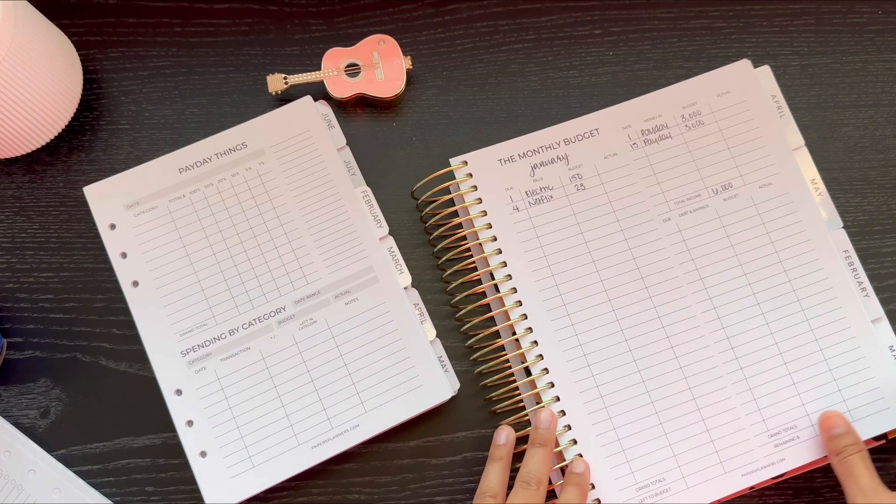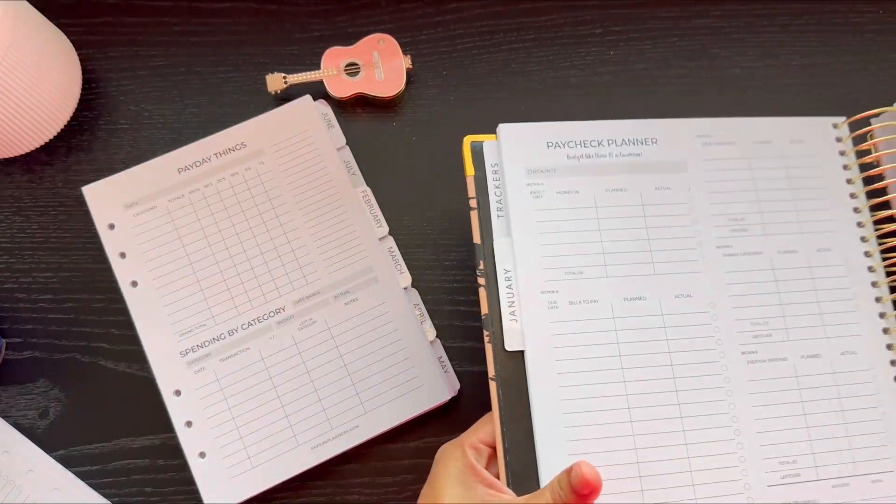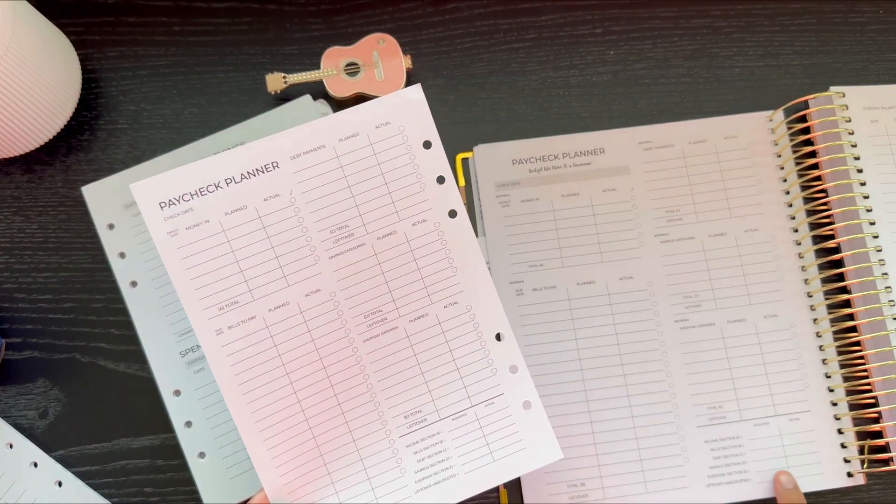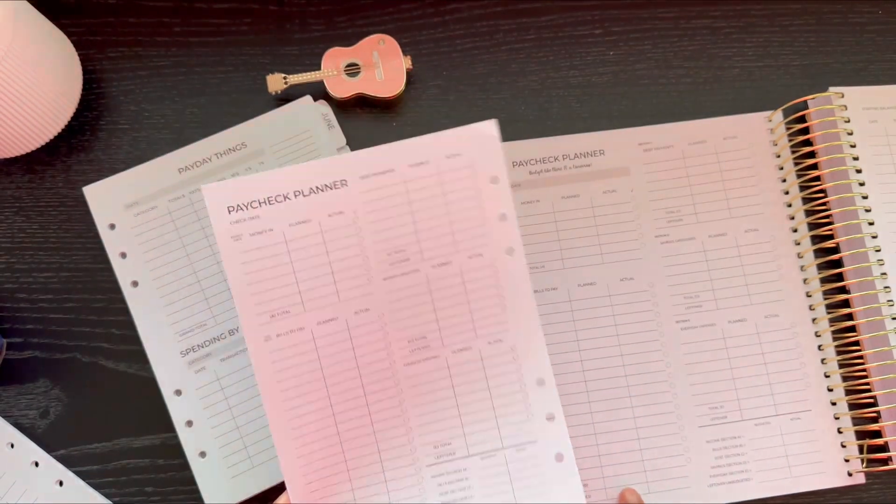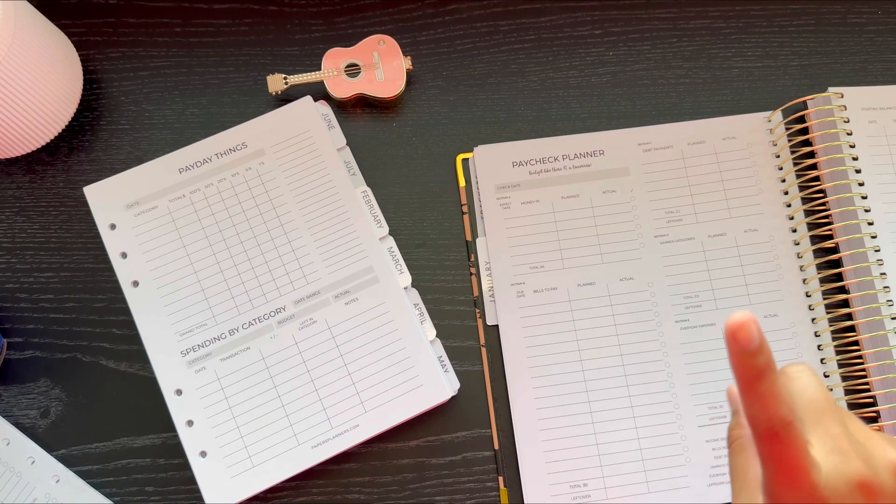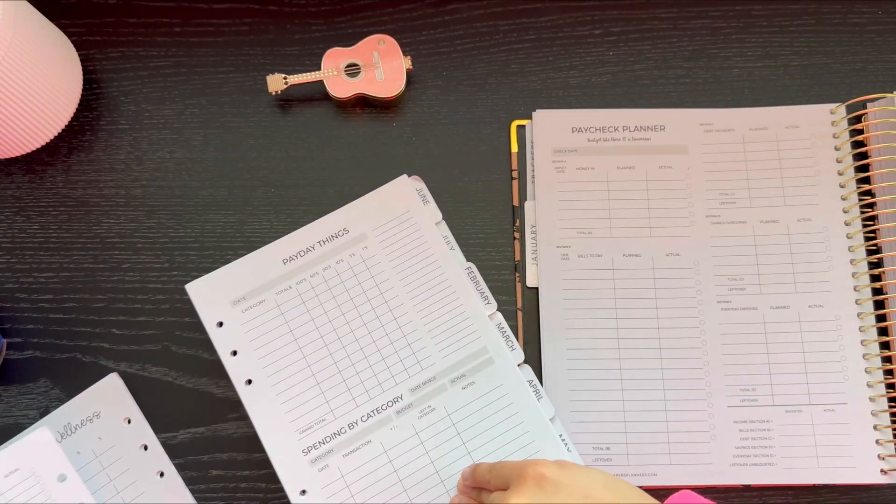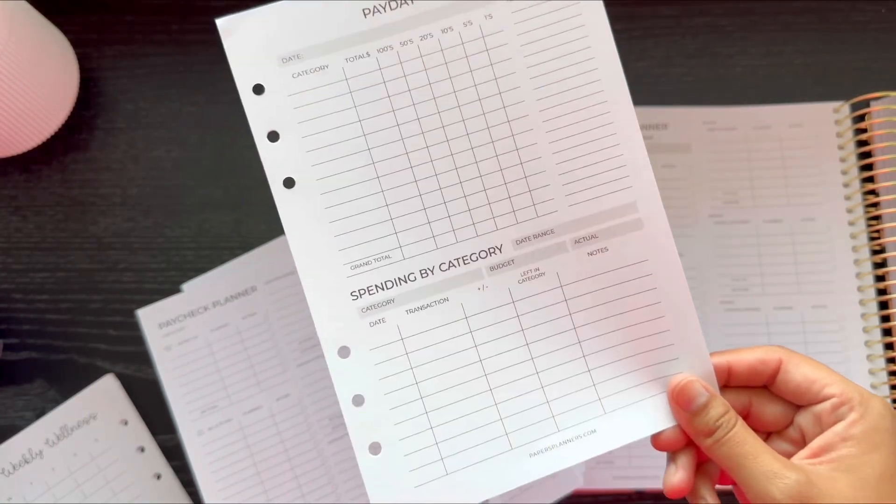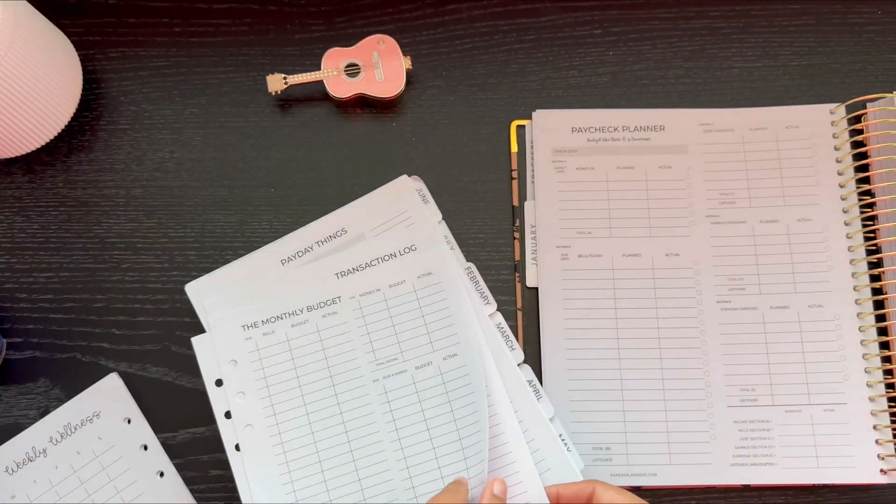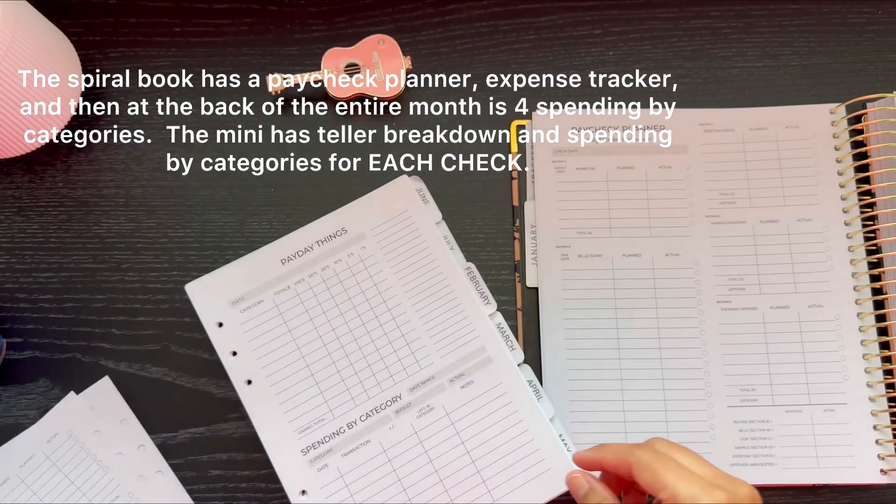You get the same amount of breakdown paychecks and expense trackers as you do in the mini and the large. They're the same amount of paycheck planners. So if you're paid weekly, biweekly, whatever, you're going to have the same. So the paycheck planner in the big one has a little quote and some grays and stuff, but this is the same. We notice we're missing one line in the big one. The little one is totally fine. But this one is the exact same layout. And then the one big difference is next to the paycheck planner, the expense tracker, and the actual spiral. In the mini, it is the payday things. It has the breakdown of teller, spending by category. You get three of those, plus the transaction log, and then it starts again. So the mini has everything in it. So one paycheck looks like this, plus this, plus this, and then it starts again. So that's the only difference.